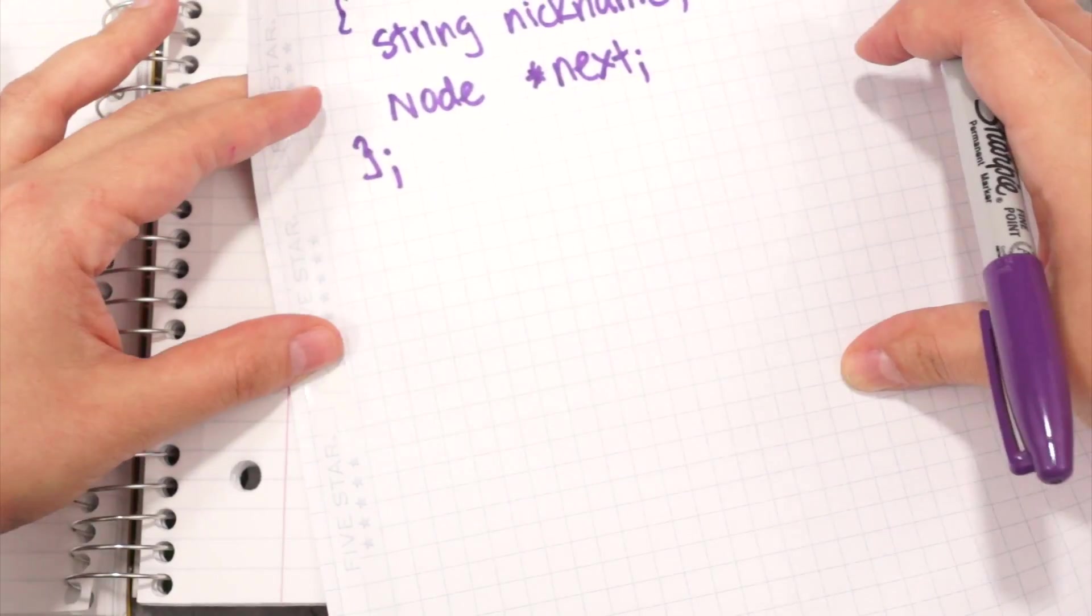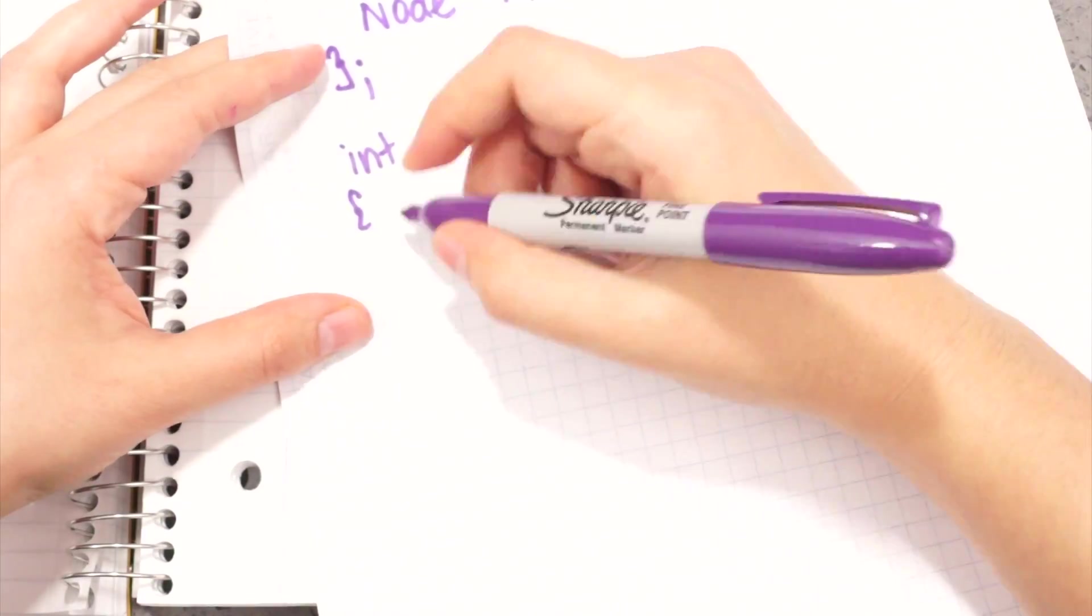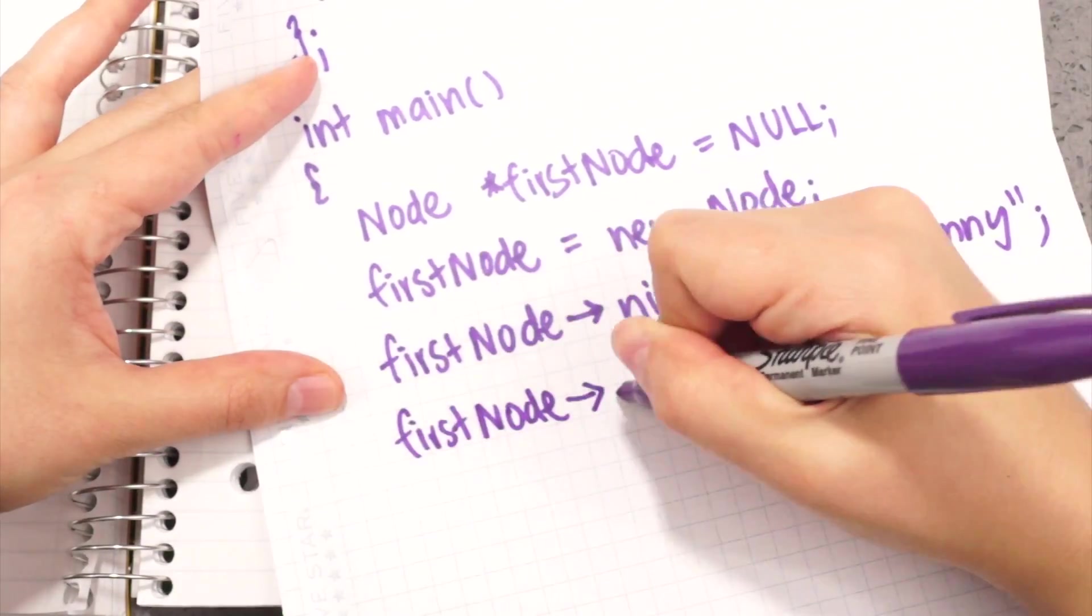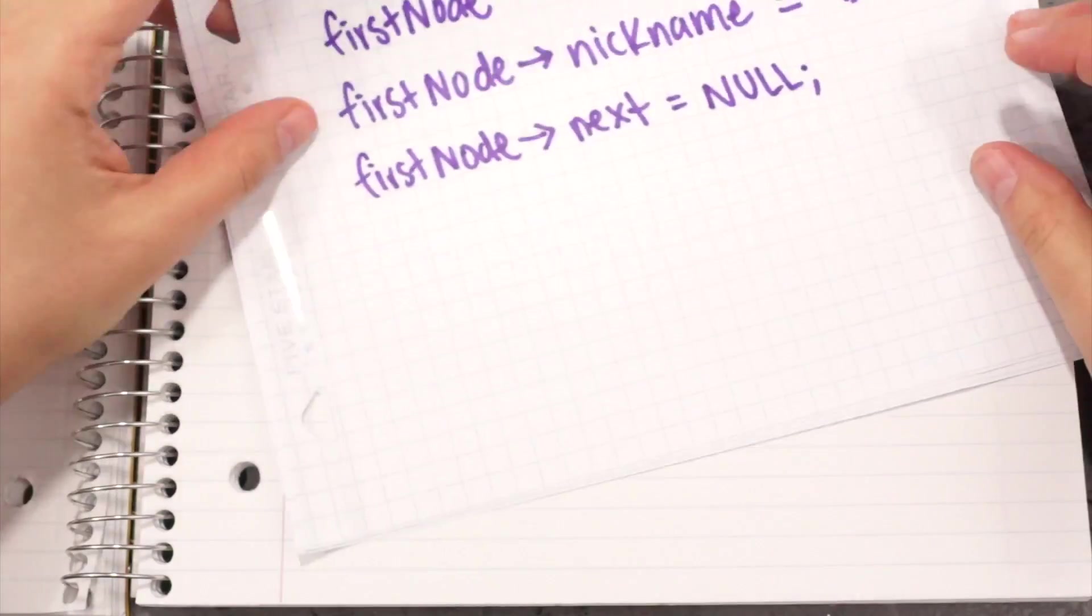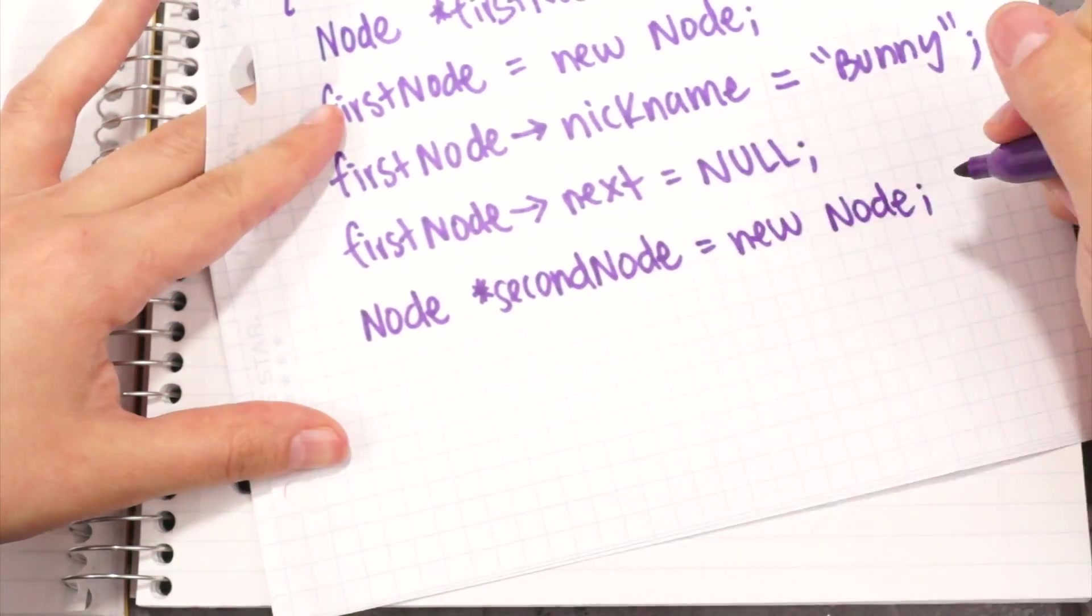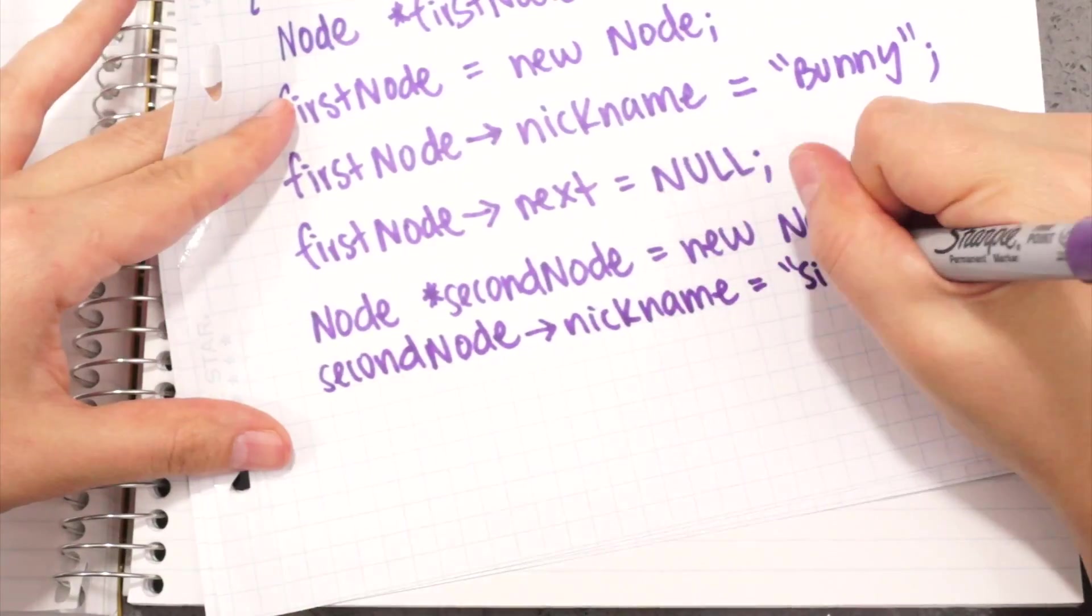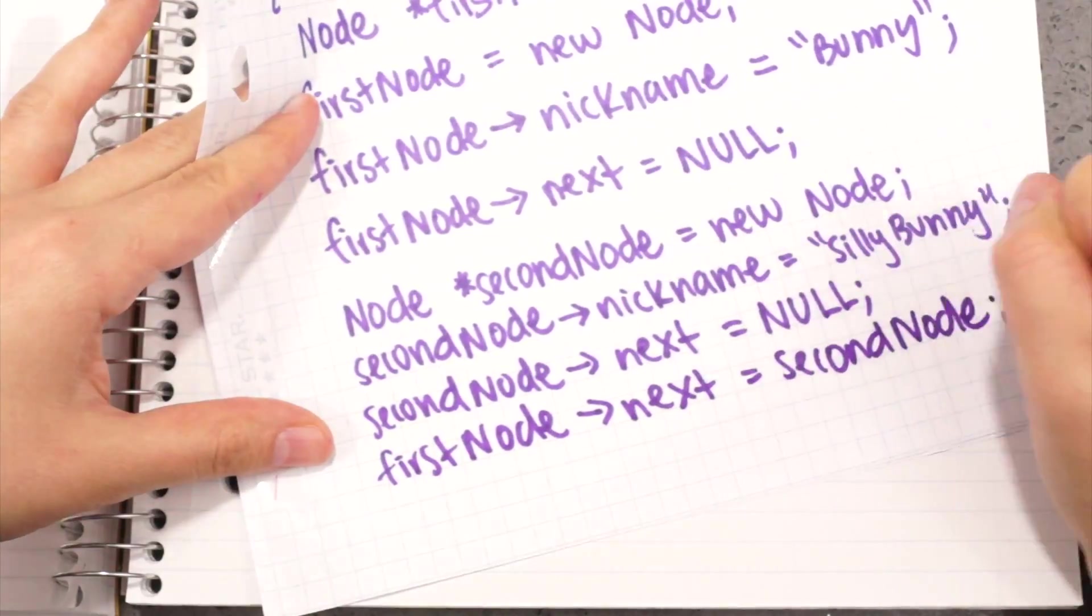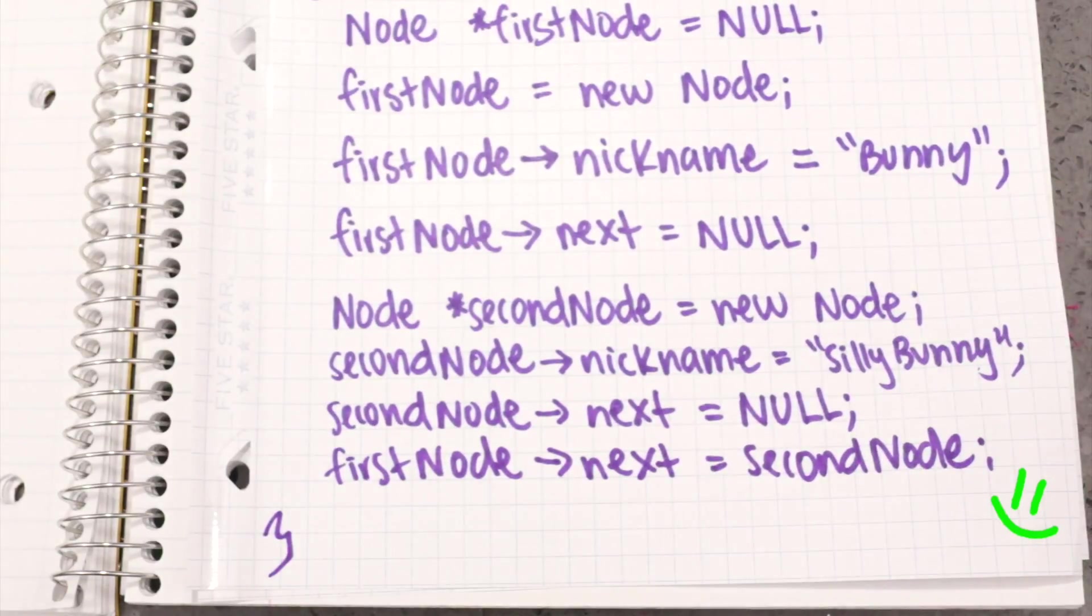Now I'm ready to create a linked list. When I create the first node, I store the nickname and set the successor pointer to null since it's the last node of the list. Then, I create a second node. Since the second node is the new end of the list, I set the successor pointer to null and point the first node to the second node. This is a simple two-node linked list.